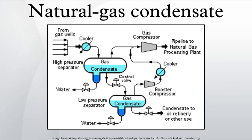The main gas compressor raises the pressure of the gases from the high and low pressure separators to whatever pressure is required for the pipeline transportation of the gas to the raw natural gas processing plant. The main gas compressor discharge pressure will depend upon the distance to the raw natural gas processing plant and it may require that a multi-stage compressor be used.